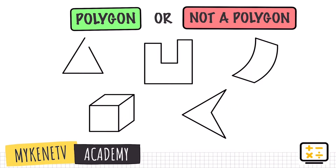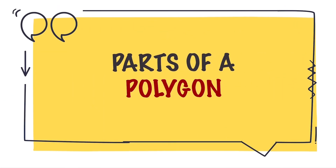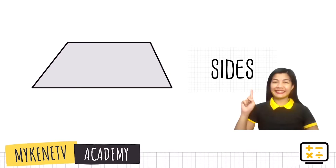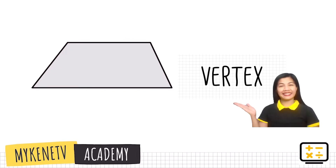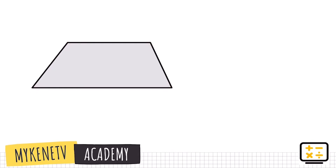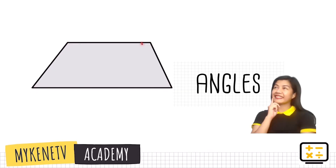Good job! Let us now proceed to the parts of a polygon. First, a polygon is made up of sides — sides are the straight lines we were talking about earlier. Next, we have vertices — vertex, or in plural form, vertices, are the pointed corners. We also have angles — the corners formed by the straight lines.